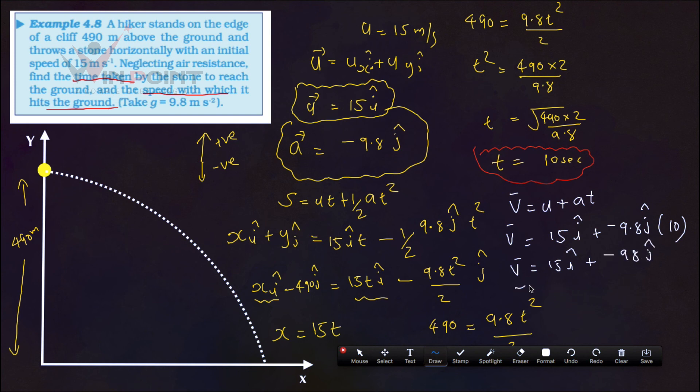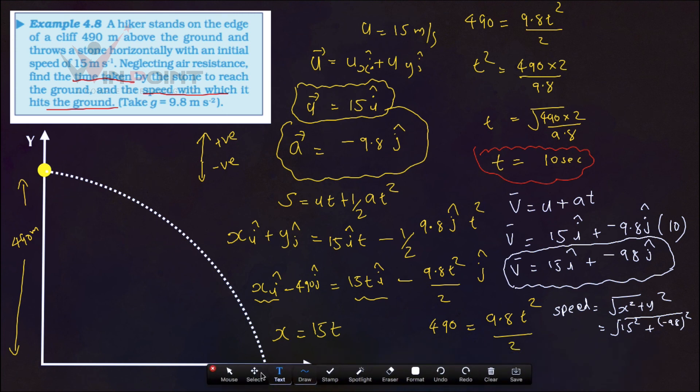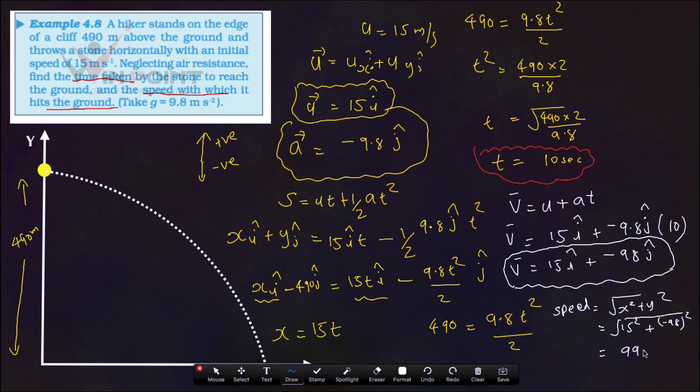So we got velocity. Now, how to find the magnitude of this velocity? If you are finding the magnitude of the velocity, we will get speed. Speed equals root of X square plus Y square, which is equal to 15 square plus minus 98 all square under the root. Then, the answer will be 99.14 meters per second.